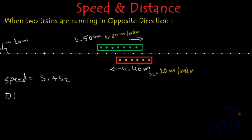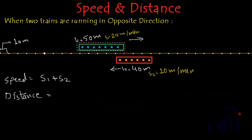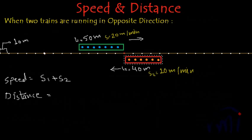Now what about the distance they have to travel to cross each other completely? We need to go back to the beginning. Initially the green train was at one position and the red train was at another, just about to cross each other. The speed is the sum of both their speeds, but what about the distance? Let's assume the green train is stationary and the red train is trying to cross it — running in its original direction — and calculate how much distance it needs to travel to cross completely.